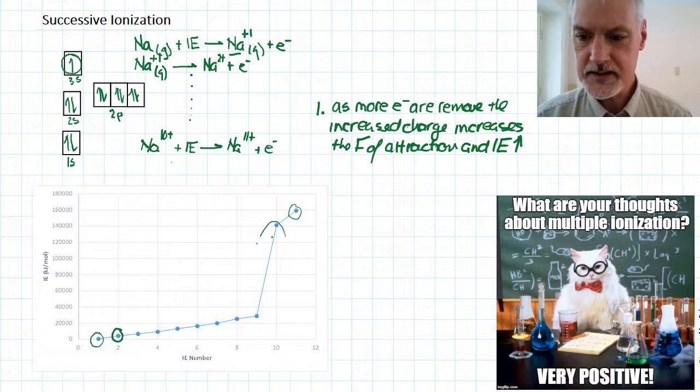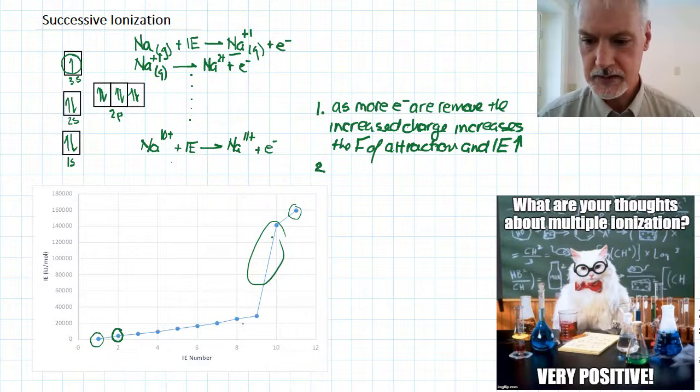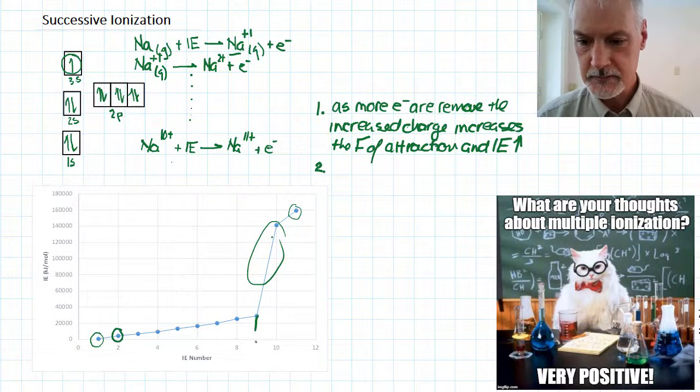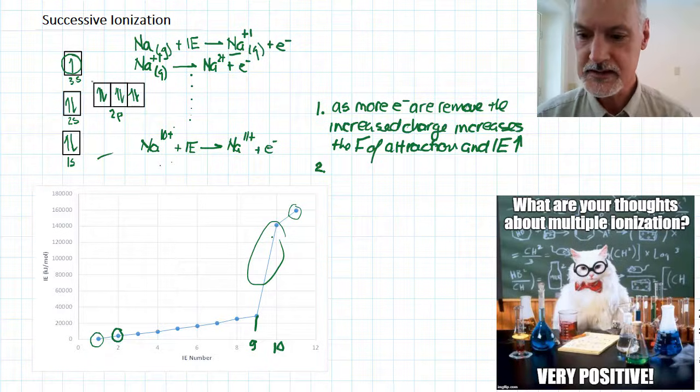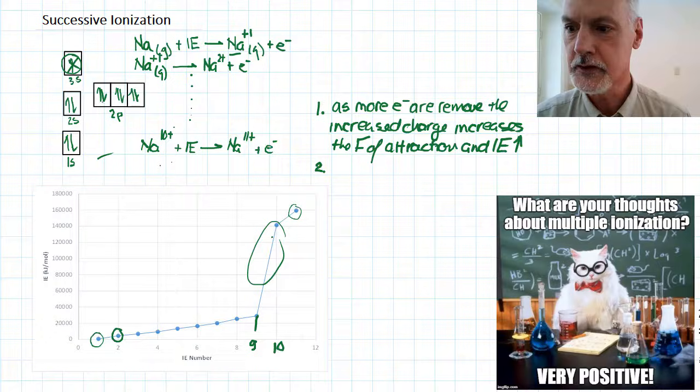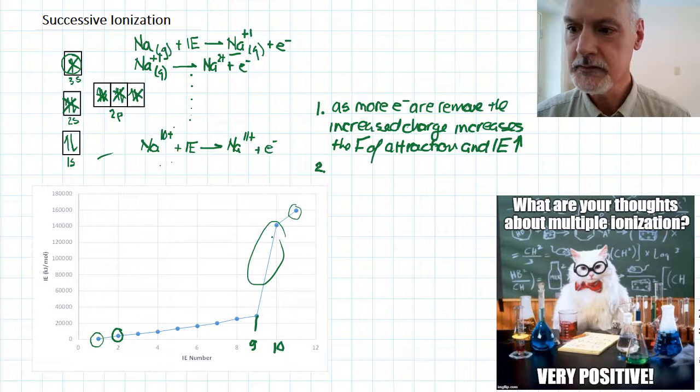But we also get these tremendous big jumps. Now what's causing those jumps? Here I notice it happening between the removal of the 9th and the 10th electron. If we go back to this diagram at the side, the electron configuration, let's look at the removal of 9 electrons. We've removed all of those—that's 7, 8, 9. All we have left here is this. So when I'm going to remove the 10th electron indicated here, all we have left is this.